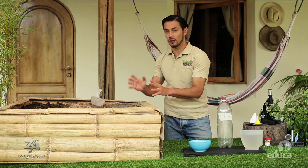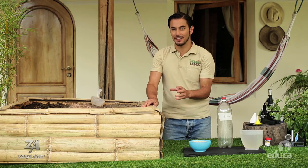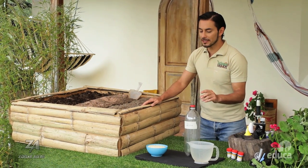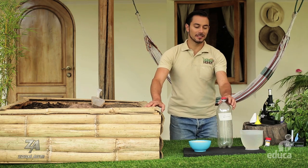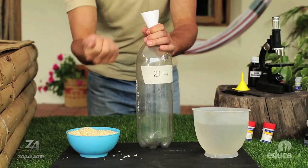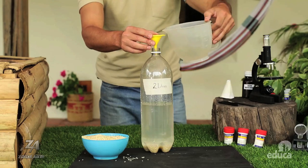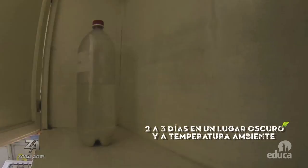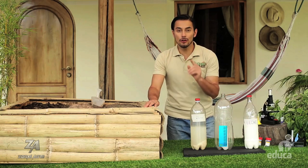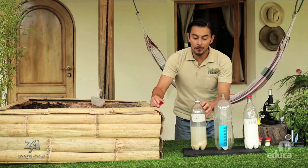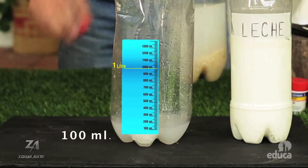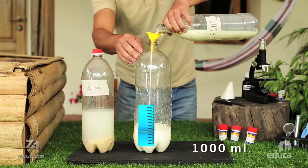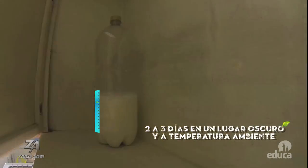Si necesitamos aumentar la fertilidad de los suelos de nuestro huerto, hay algunas técnicas que nos pueden ayudar a capturar y multiplicar a los microorganismos eficientemente. Para esta técnica vamos a utilizar arroz, una botella con tapa y agua pura o agua de lluvia. Coloca arroz y agua pura o agua de lluvia en una botella de plástico de 2 litros. Deja la botella en un lugar oscuro a temperatura ambiente. Al cabo de 2 o 3 días, el agua estará fermentada y con un fuerte olor. Vierte 100 mililitros de líquido fermentado en otra botella plástica de 2 o 3 litros y mézclalo con un litro de leche cruda y entera. Tapa el recipiente y guárdalo en un lugar oscuro a temperatura ambiente.